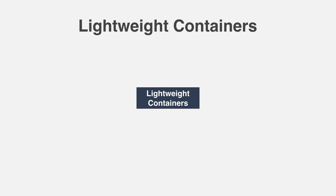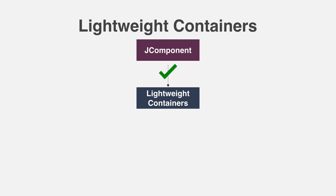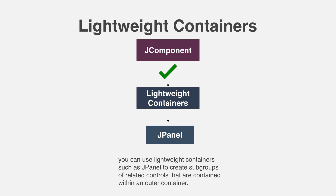The second type of container supported by Swing is the lightweight container. Lightweight containers do inherit JComponent. An example of a lightweight container is JPanel, which is a general-purpose container. Lightweight containers are often used to organize and manage groups of related components. Because a lightweight container can be contained within another container, you can use lightweight containers such as JPanel to create subgroups of related controls held within an outer container.